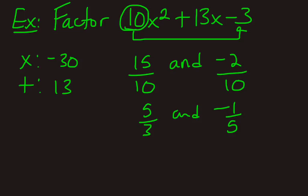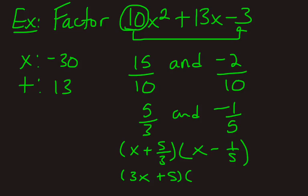So then in brackets, x plus 5 over 3. And x minus 1 over 5, just like that. And then we multiply each bracket by the denominator of the fraction. So I'm going to multiply this first bracket by 3. And that gets us 3x plus 5. And then 5x minus 1. So there you go. That's the factored form of this guy.